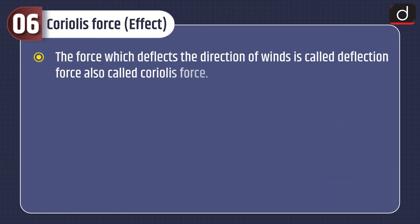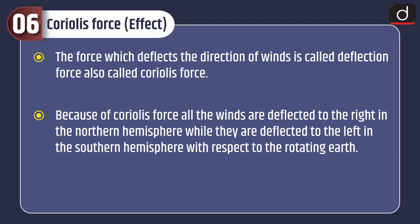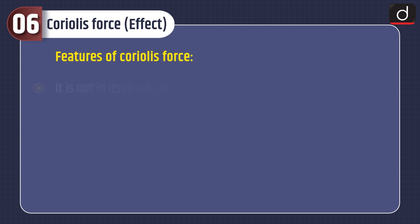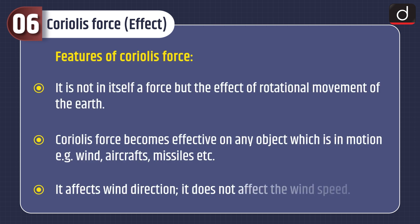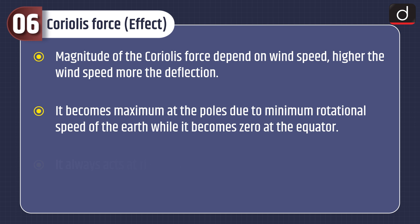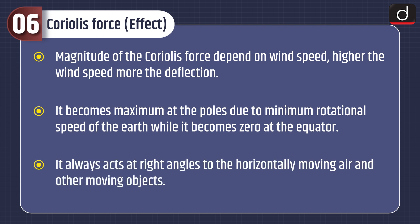The force which deflects the direction of winds is called the deflection force, also called Coriolis force. Due to Coriolis force, all winds are deflected to the right in the northern hemisphere and to the left in the southern hemisphere. It is not in itself a force but the effect of the rotational movement of the earth. It becomes effective on any object in motion — wind, aircraft, missiles, etc. It affects wind direction but does not affect wind speed. The magnitude of Coriolis force depends on wind speed — higher the wind speed, more the deflection. It is maximum at the poles and zero at the equator, and always acts at right angles to the horizontally moving air.